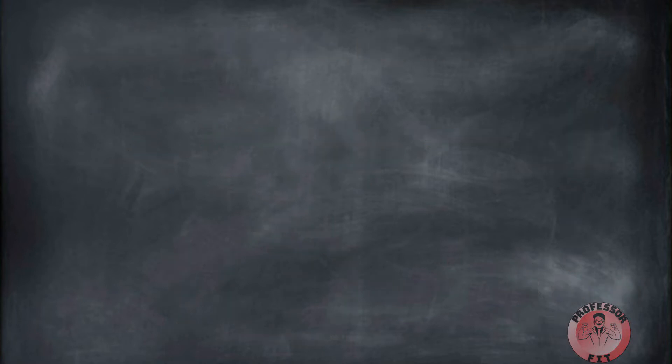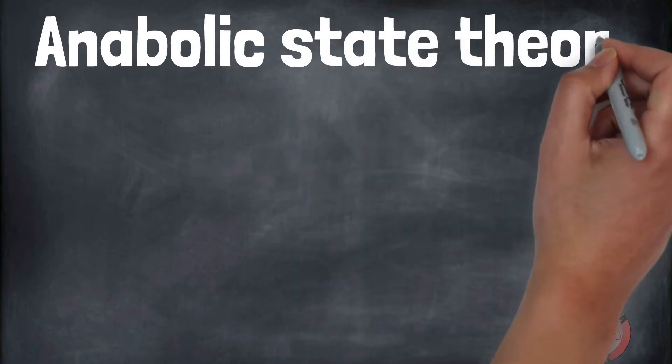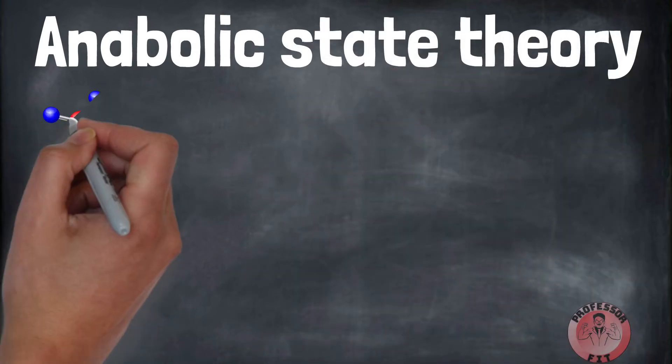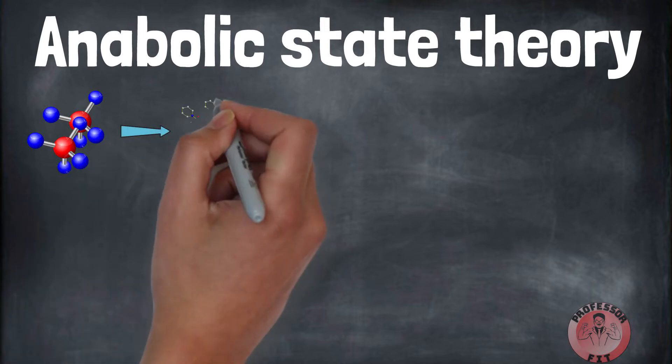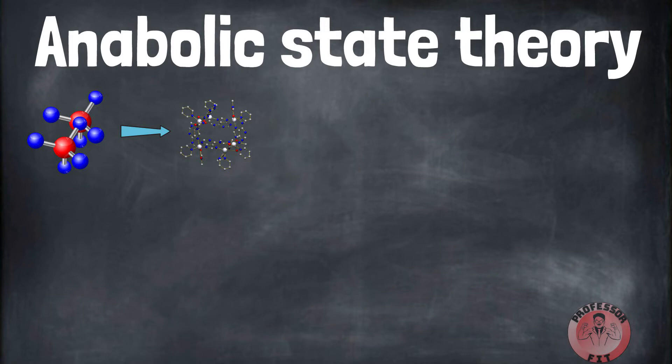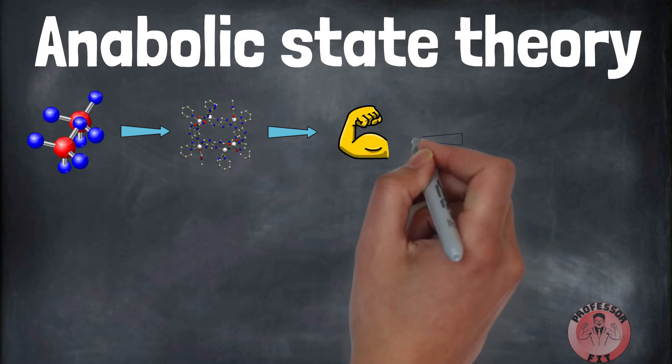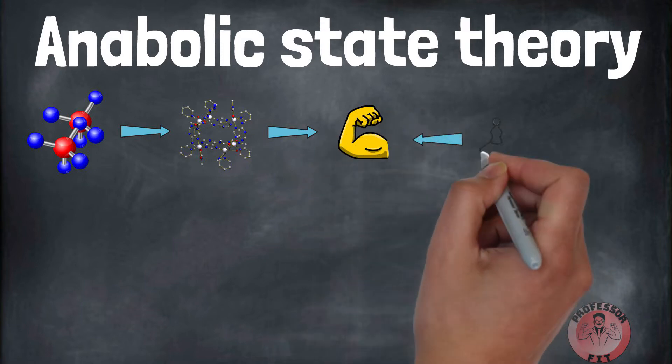Anabolic state theory: The anabolic window theory is based on your body's anabolic response. Anabolism is when small molecules grow into bigger complex molecules. These molecules form into new cells and tissues, including muscle. It's the opposite of catabolism, or when larger molecules break down. After strength training, your body is in an anabolic state.